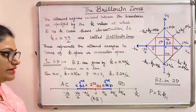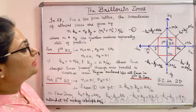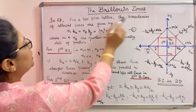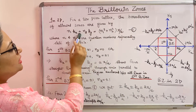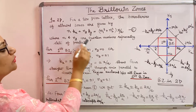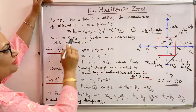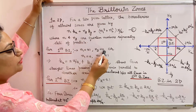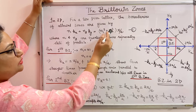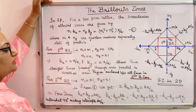For a 2D lattice, let us see what will be the shape of the Brillouin zones. The boundaries of the allowed zones are given by the equation n1*kx plus n2*ky equals (n1 squared plus n2 squared) times pi by a, where n1 and n2 represent the quantum numbers of the state of a particle. For the first Brillouin zone, n1 is plus or minus 1 and n2 is 0, or n1 is 0 and n2 is plus or minus 1.